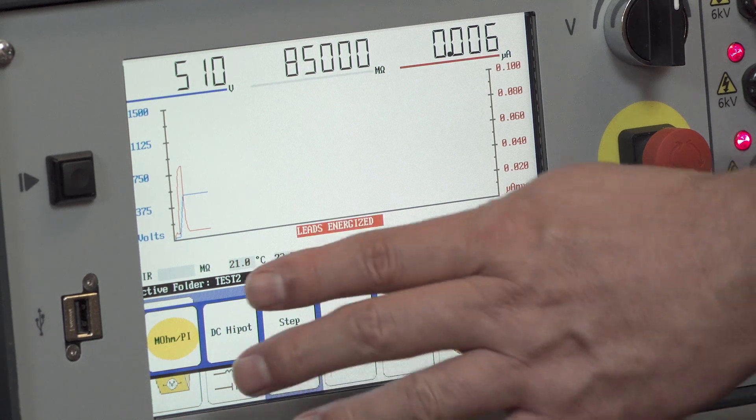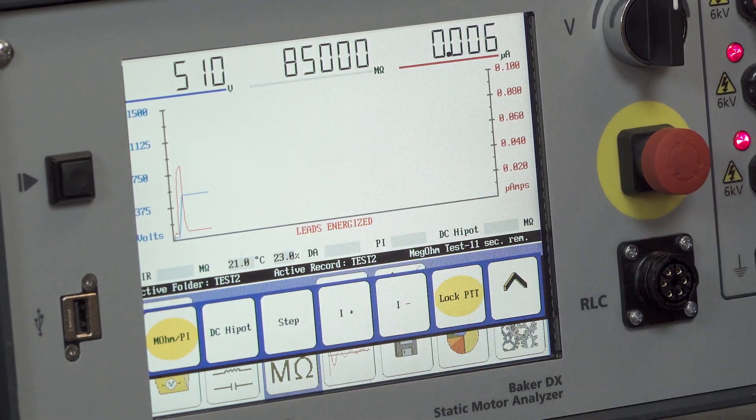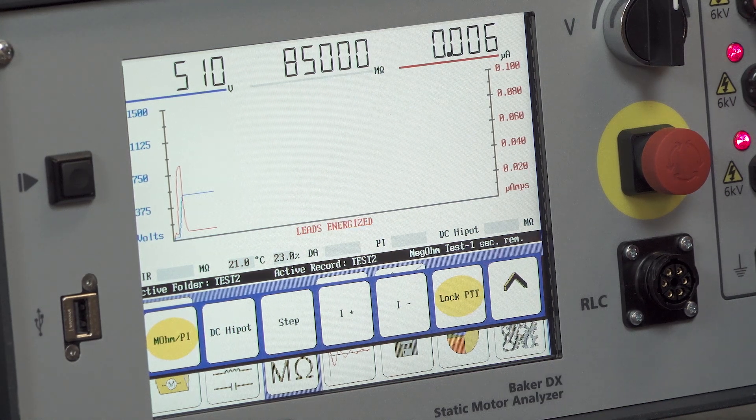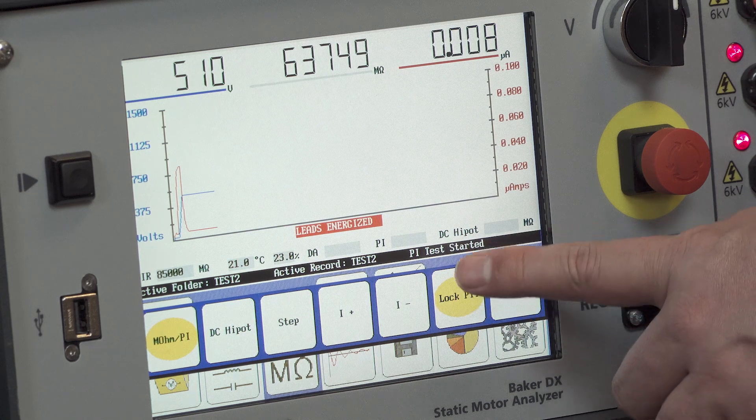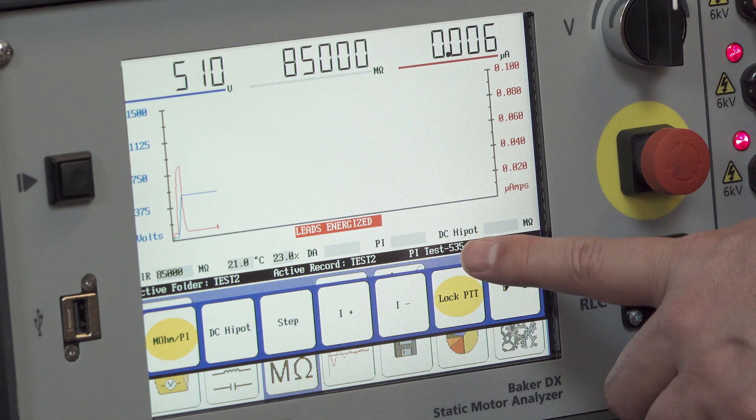At this point we're performing the mega test, and that's our mega ohm test time limit here. Now that the timer has expired for the mega test, it continues into the full PI.